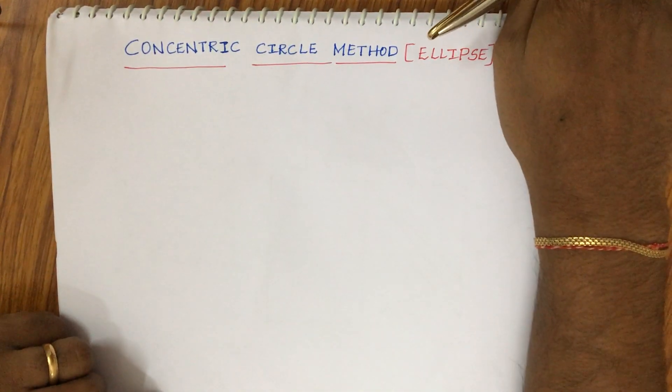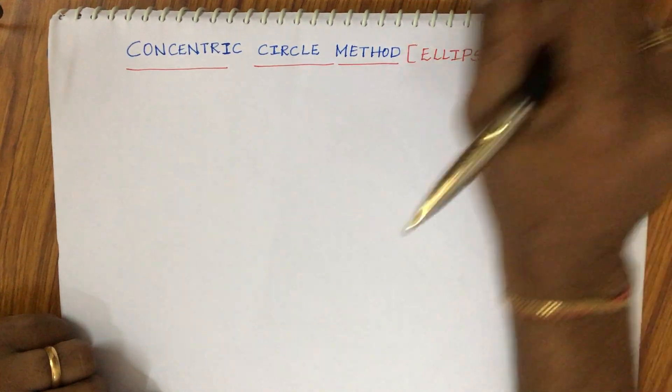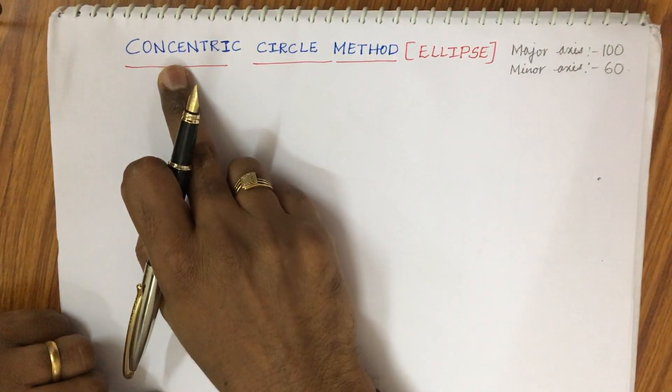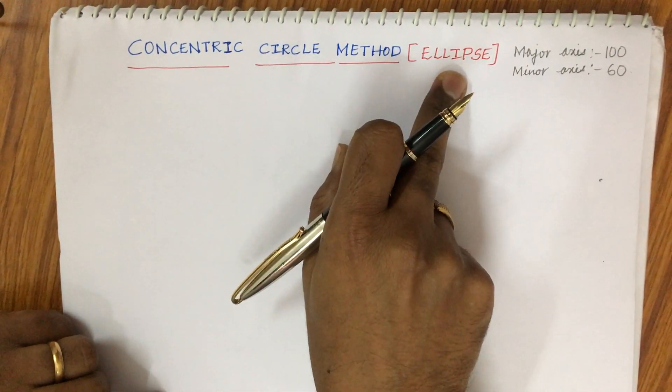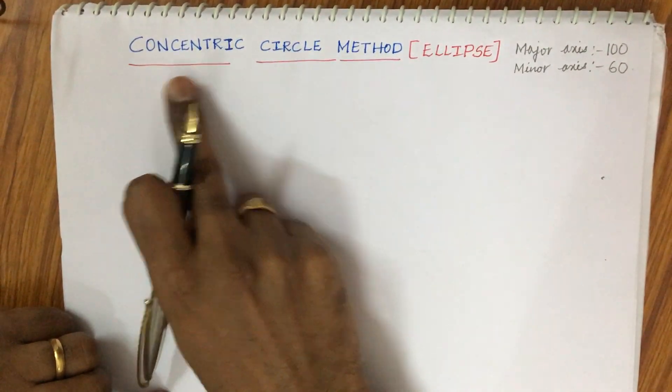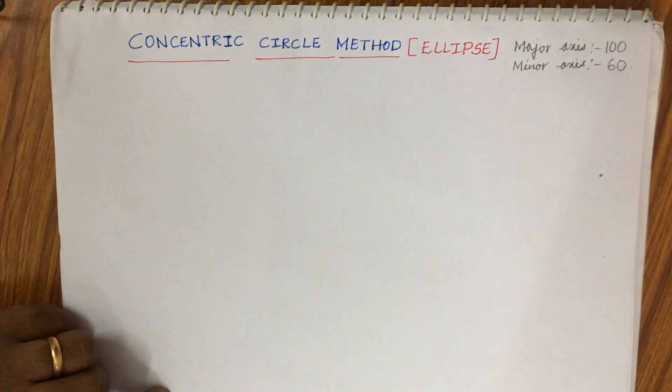Sometimes they will not be giving anything like major axis or minor axis. They will just ask you to construct an ellipse using the concentric circle method.